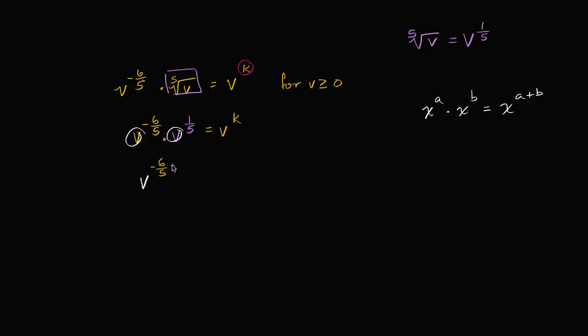This is going to be equal to v to the k. I think you might see where this is all going now. So negative six-fifths plus one-fifth is going to be negative five-fifths or negative one.